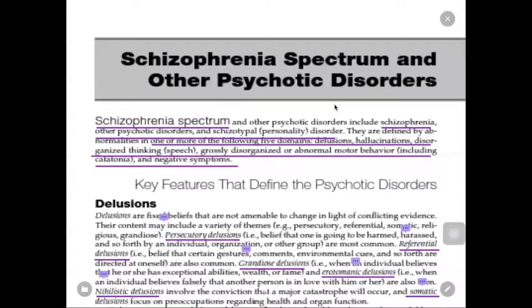So when are we going to say that a person is psychotic? The patient must have one or more of the following five domain symptoms, which are delusions, hallucinations, disorganized thinking — reflected by disorganized speech — and grossly disorganized or abnormal motor behavior, including catatonia, and negative symptoms.